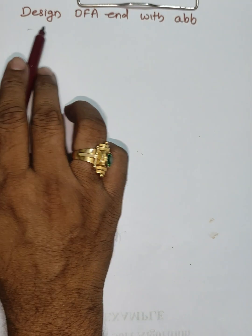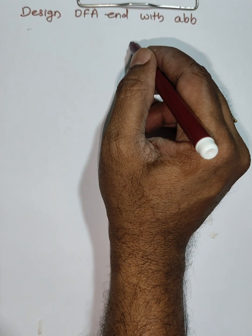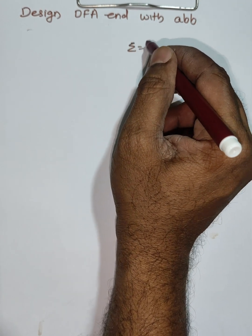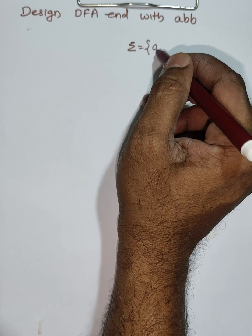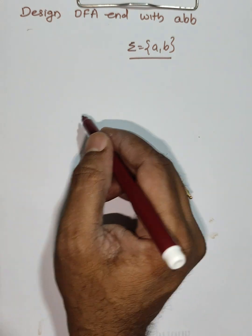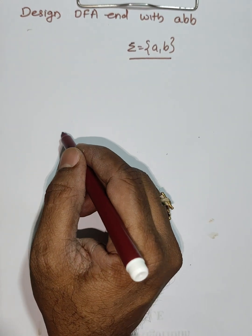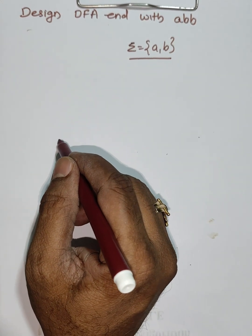Dear friends, design a DFA that ends with ABB. What are the input symbols? There are two input symbols: sigma equals A and B. From these two input symbols we have to generate strings ending with ABB, which means the minimum length of the string is three — A, B, B.